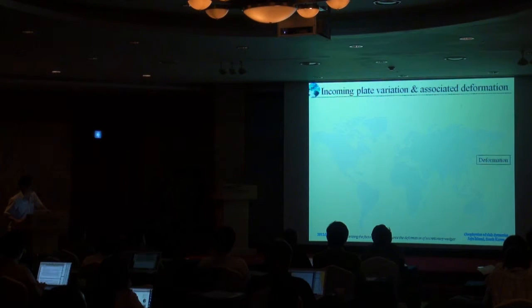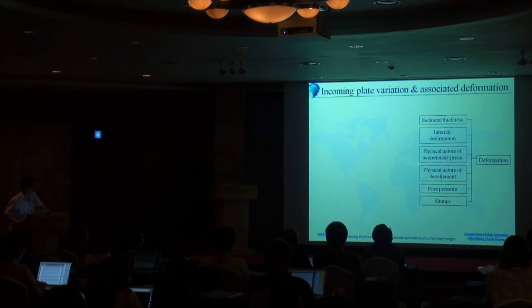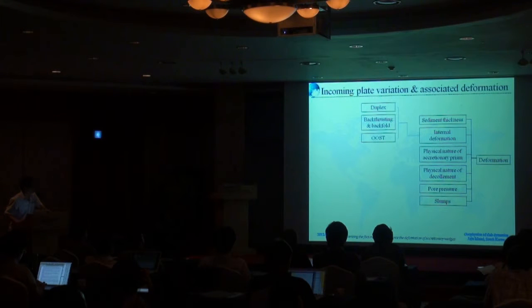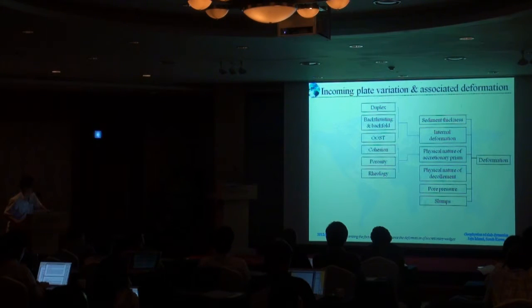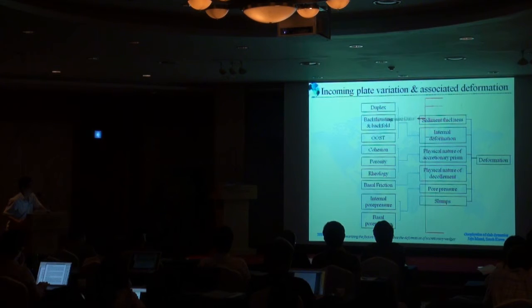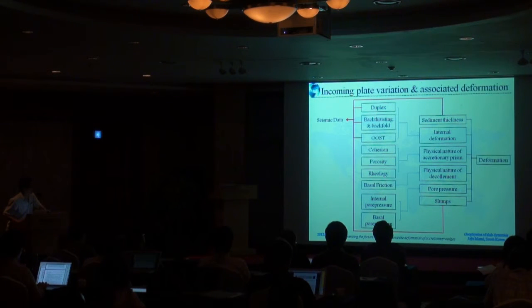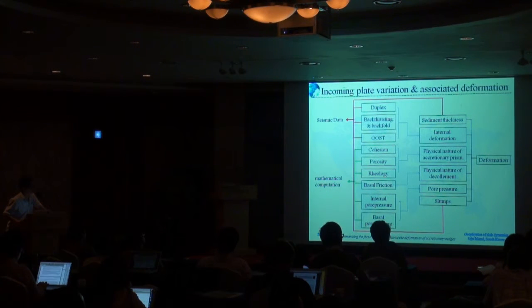There are many factors that can influence the deformation of an accretionary wedge, which include sediment thickness, internal deformation including duplex back-thrusting, backfold, out-of-sequence thrust, and also the physical nature of the accretionary prism. The decollement also can influence the deformation. Other factors include pore pressure and slumps that may exist. Some of these factors can be directly identified from seismic data, and other factors can be underestimated by mathematical measure.